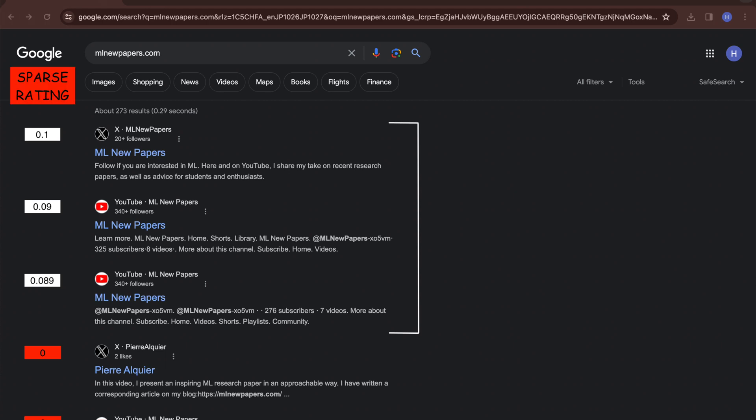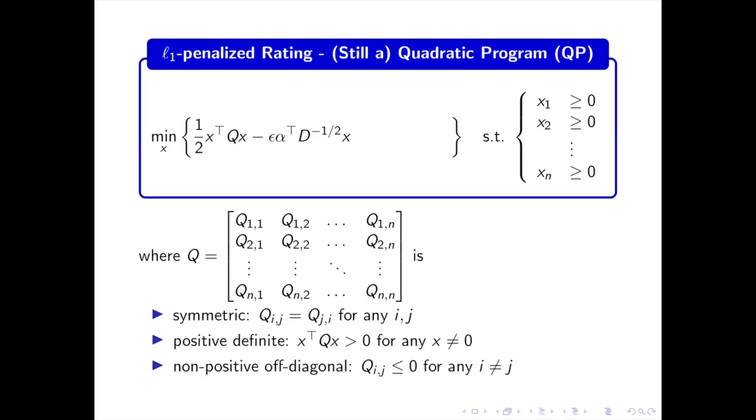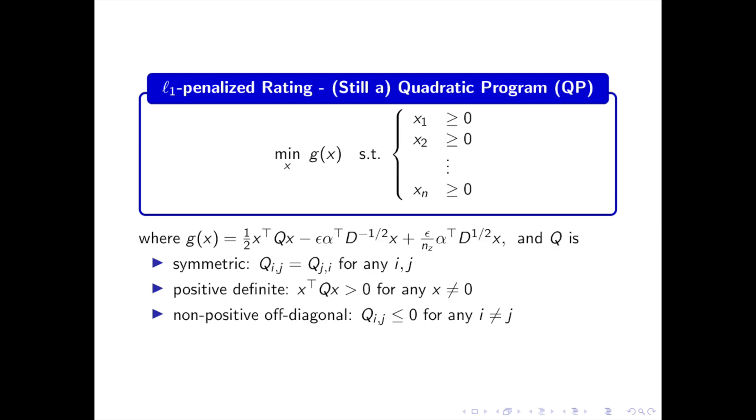In other words, we're looking for a sparse rating vector R which only has N_Z elements R_P which are not 0. Previous works showed that instead of a standard rating problem, one can find a sparse rating vector by adding a small L1 penalization to the problem, in red on the screen. We denote by G the new function to minimize. In today's video, we will solve this minimization problem.